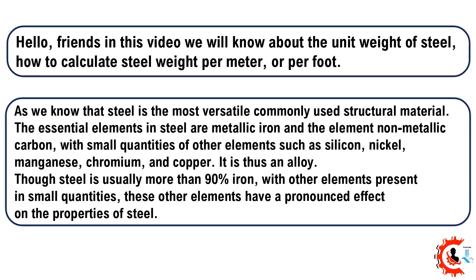As we know, steel is the most versatile and commonly used structural material. The essential elements in steel are metallic iron and the non-metallic element carbon, with small quantities of other elements such as silicon, nickel, manganese, chromium, and copper. It is thus an alloy. Though steel is usually more than 90% iron, these other elements have a pronounced effect on the properties of steel.